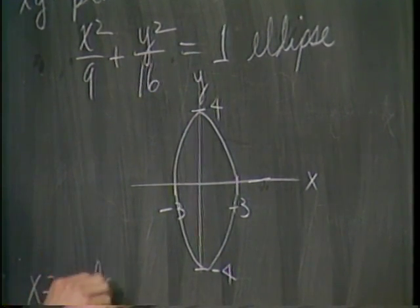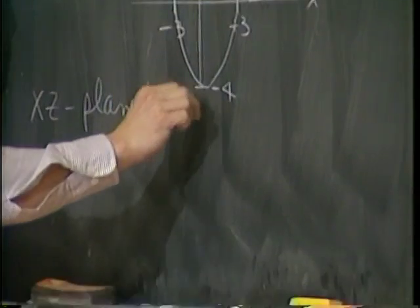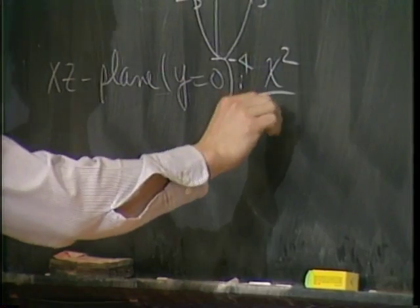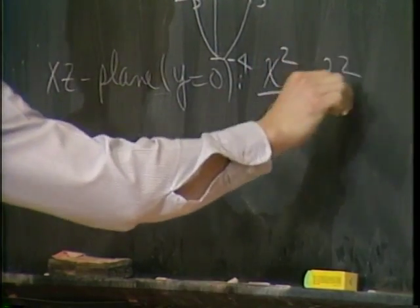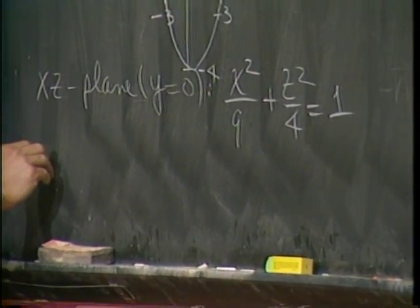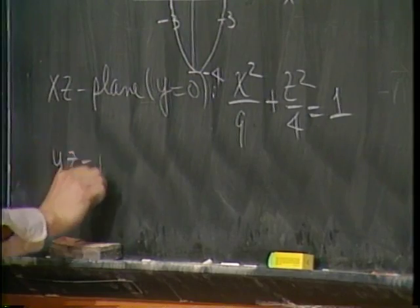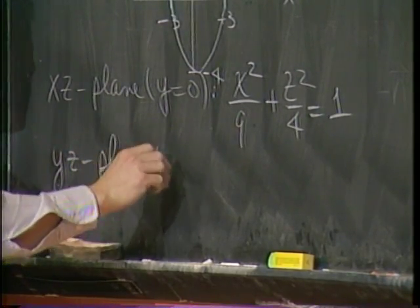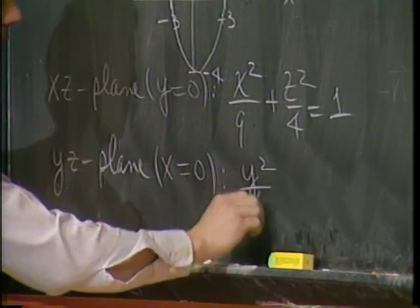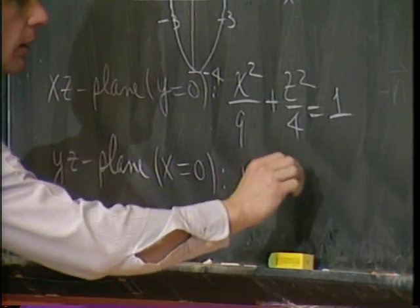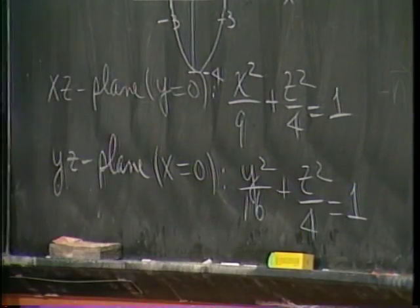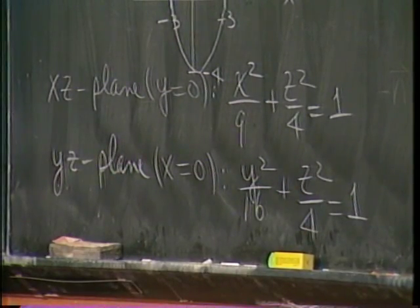So there is that creature right there, roughly. And in the other planes, for example, the xz plane, when y equals 0, you get x squared over 9 plus z squared over 4 equals 1.